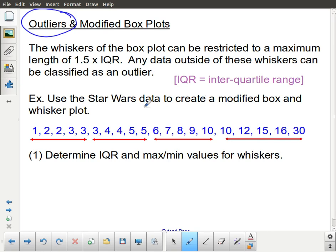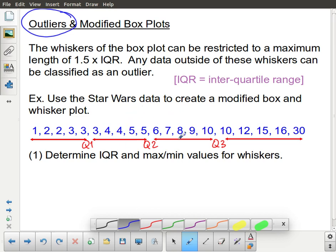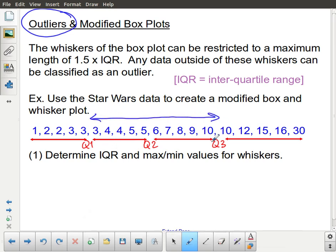Once again, back to our Star Wars survey data. I've already marked quartile one, quartile two, quartile three. The first thing we need to do is to calculate the interquartile range. The interquartile range tells us the range between quartile one and quartile three, basically how wide is the box part of your box plot. The interquartile range is equal to Q3 minus Q1, which is equal to ten minus three. That's equal to seven.